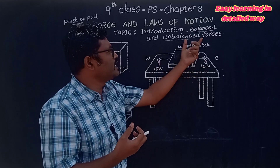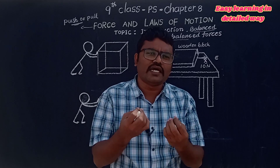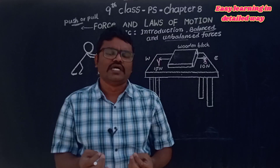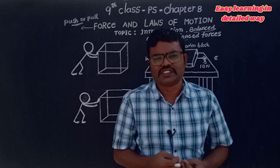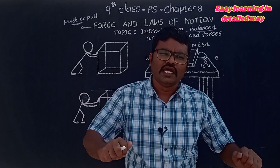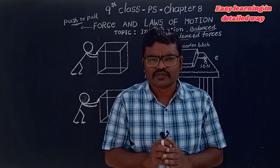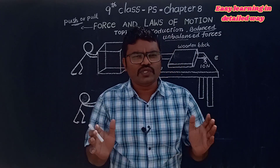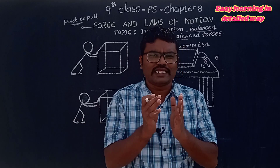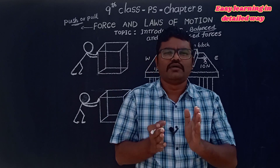So these are called balanced forces. Whenever two forces are applied on an object in opposite directions of equal magnitude, the forces are called balanced forces. In a tug of war, if both sides apply the same force and the rope is stable, that is also an example of balanced forces.